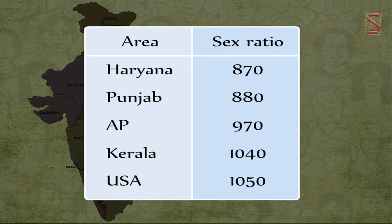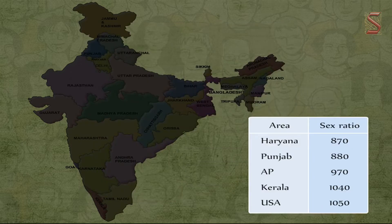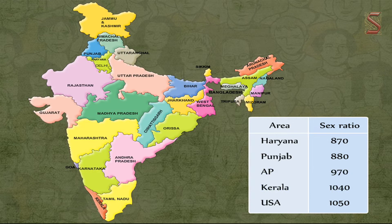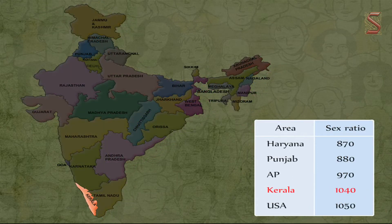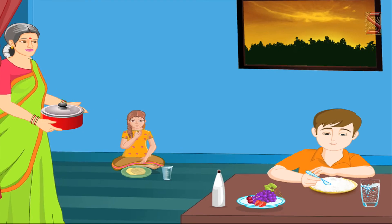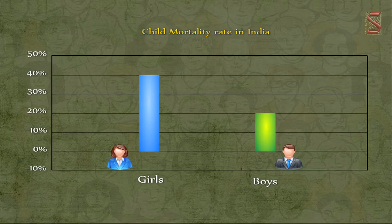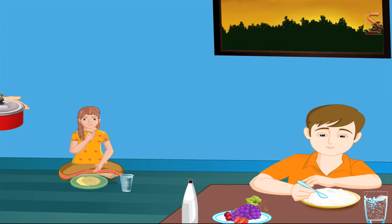This table shows the sex ratios of various states in India compared with the USA. While the sex ratio is 870 in Haryana, 880 in Punjab, 970 in Andhra Pradesh, and 1040 in Kerala, the number of females per thousand males in the USA is 1050. Kerala has a positive sex ratio compared to other states in India. One striking aspect of gender bias is the partiality shown to boys, resulting in high mortality rates for girls.